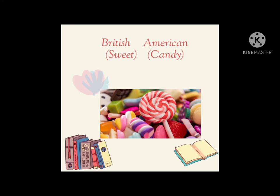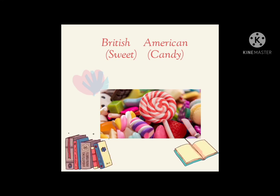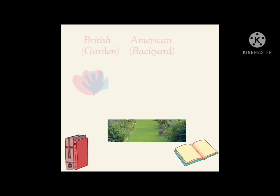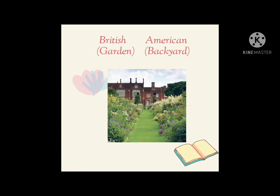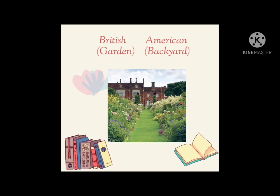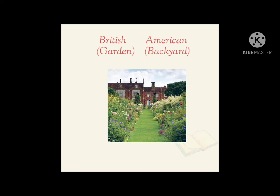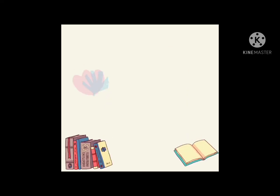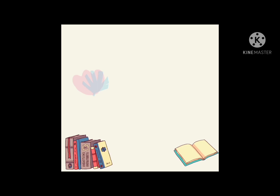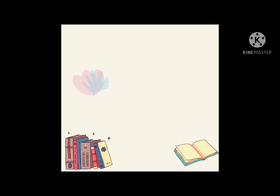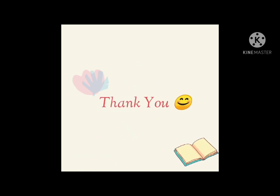And in American, this is candy. And the last, in British, this is garden, and in American, this is backyard. Okay guys, that's all and those are examples of the differences in vocabulary between British and American English. I hope it can increase your knowledge and can help you get to know more about the differences between British and American English. Thank you so much and see you in the next video. Goodbye!